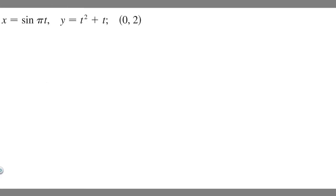In this problem, we're told to find an equation of the tangent to the curve at the given point. We're given some parametric equations, a point, and what we're trying to do is find the equation of the line tangent to the curve. So how do we go about doing this? The way we're going to do this is by finding dy/dx first.